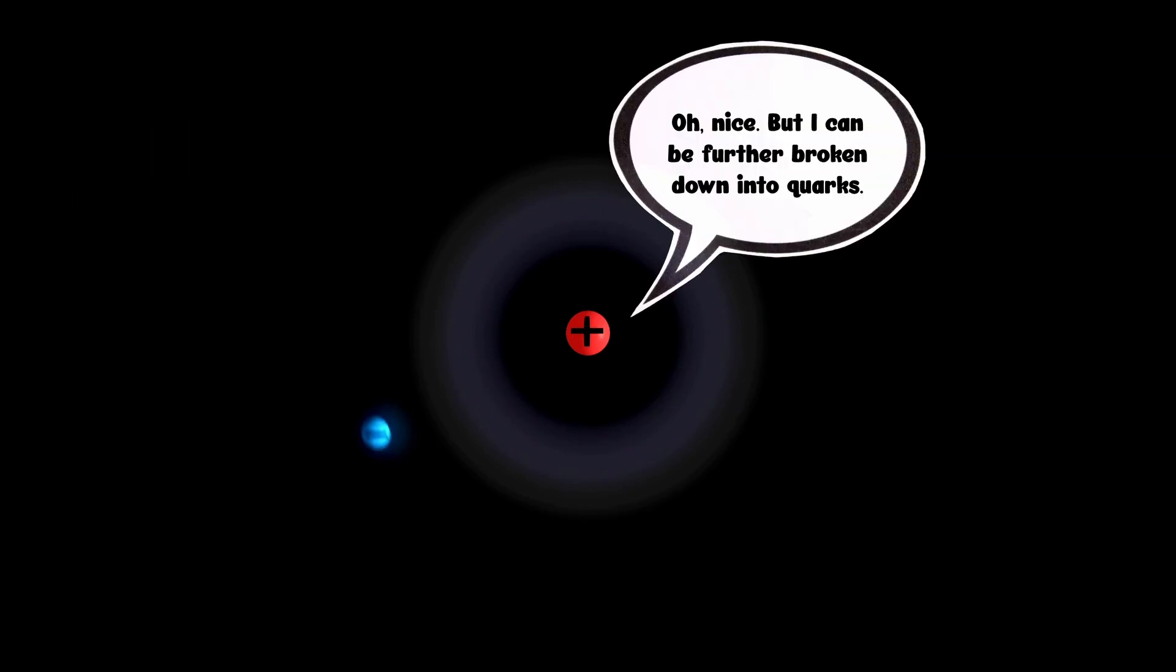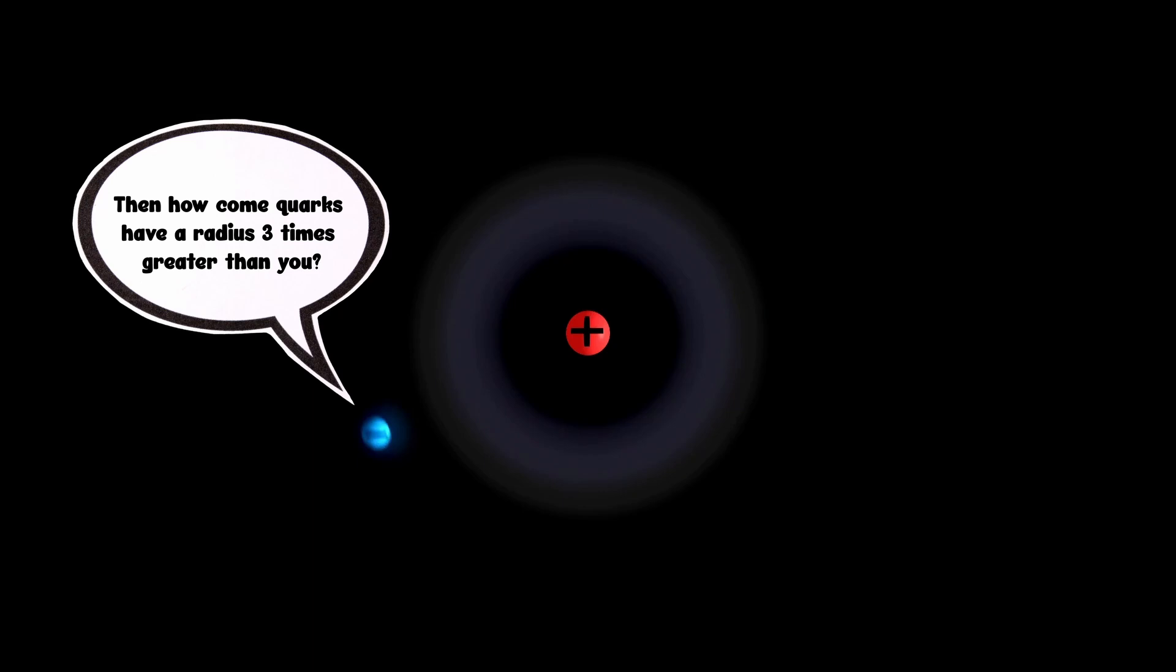You see, unlike its peers, the electron has resisted being further broken down into more elementary pieces. However, if electrons and quarks are fundamental, and quarks reside in protons, how is its radius three times larger than that of a proton?